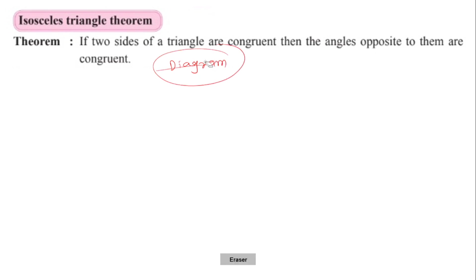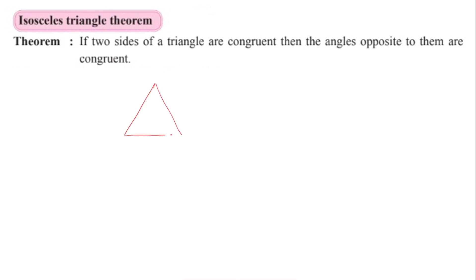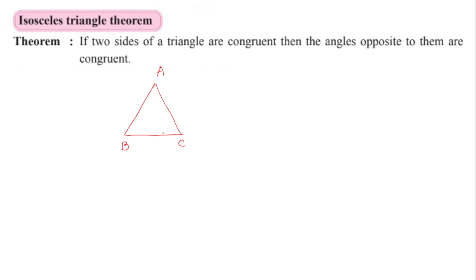It will show you a triangle. If two sides of this triangle — sides AB and AC — are congruent, that is the given. Then we get to prove that the angles opposite to them are also congruent. The opposite angle to AC is angle B, and the opposite angle to AB is angle C, so we have to prove that these two angles are congruent.